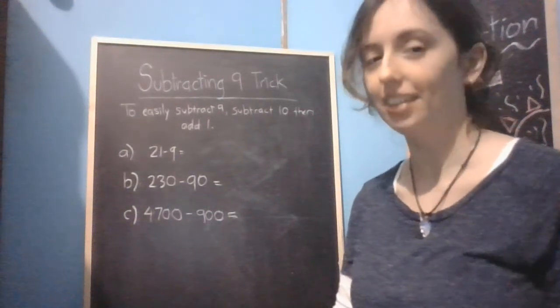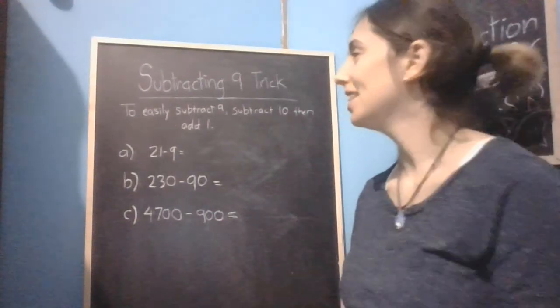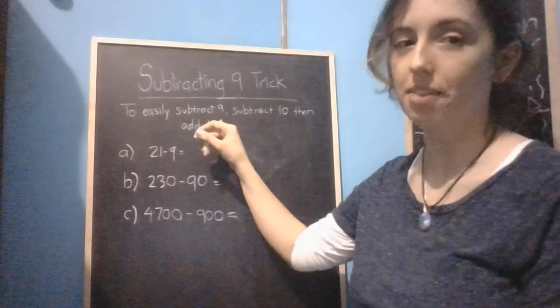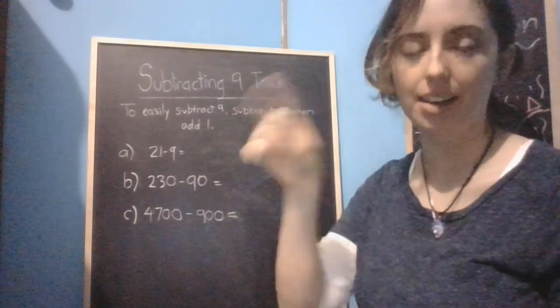This is the trick for subtracting 9. There is a trick to it. So the easiest way to subtract 9 from any number is to just take away 10 and then add a 1 back on.